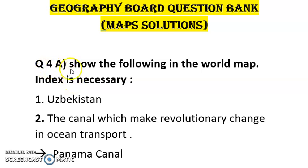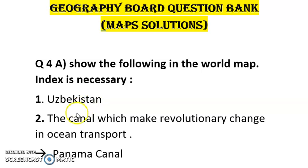Question 4A says: show the following in the world map — index is necessary. Always you have to make an index in the map. The first item is Uzbekistan — you have to show it in the map. The second question is the canal which makes a revolutionary change in ocean transport. If such a type of question comes, you have to tell the name of that canal.